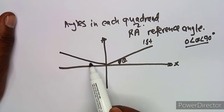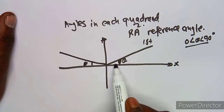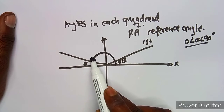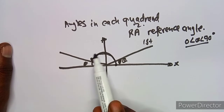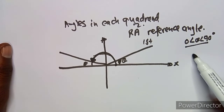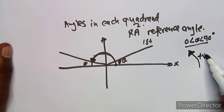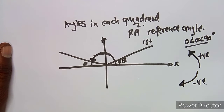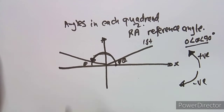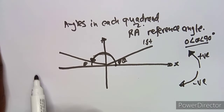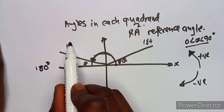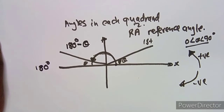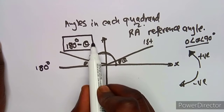In the second quadrant, this is your theta here, but the actual angle you're going to take is measured from the positive horizontal axis in either anti-clockwise or clockwise direction. Angles taken anti-clockwise are positive; angles taken clockwise are negative. Since angles on a straight line add up to 180 degrees, the actual angle in the second quadrant is 180 degrees minus theta.